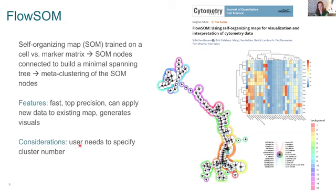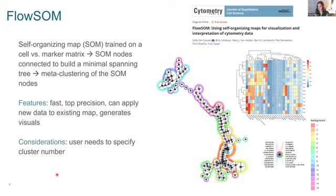FlowSOM is fast, probably one of the fastest clustering tools available. It reproduces prior knowledge well and finds major lineages reliably. One consideration is that you do have to specify the cluster number — it's not 100% unsupervised. As a starting point, use the parameter number: if you have 18 parameters, expect at least 18 cell types. I usually guess how many manual populations I can find and then over-tune a bit — if I know I can find 15, I'll ask FlowSOM for 20. With recent updates, you can run FlowSOM multiple times and compare different cluster outputs to find the magic number that gives the separation you want.